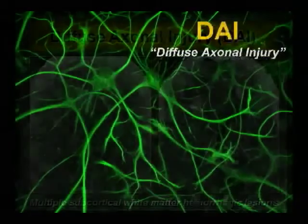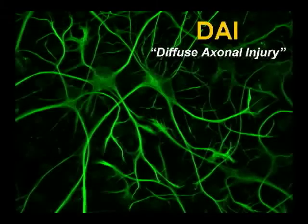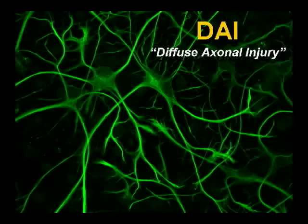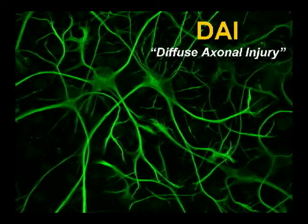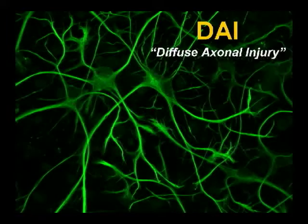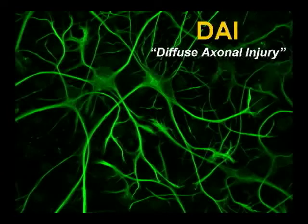When we think about diffuse axonal injury, we're not comfortable with the term DAI — that's going to change over the next few years because it's not always diffuse and it's not just the axons. On a floral jade green stain of neurons and their axons, you can see how fragile they are — which is why we underestimate the true extent of brain injury when things get sheared.